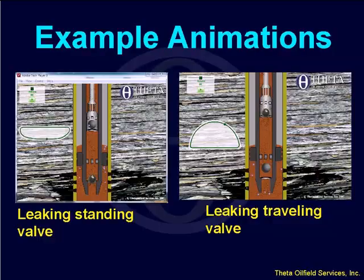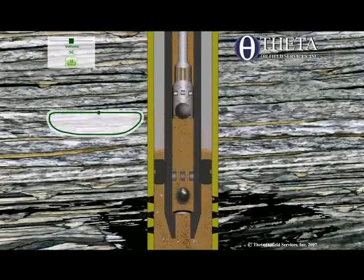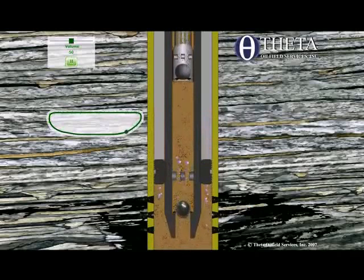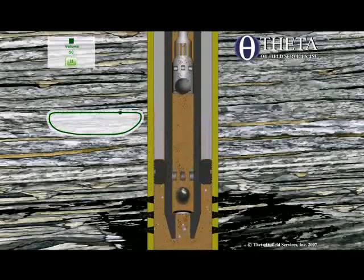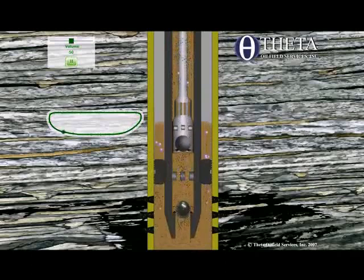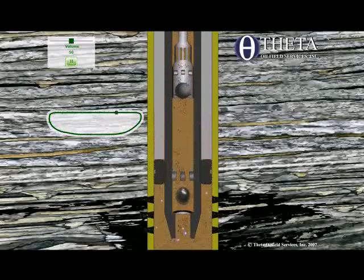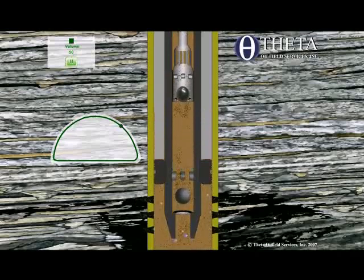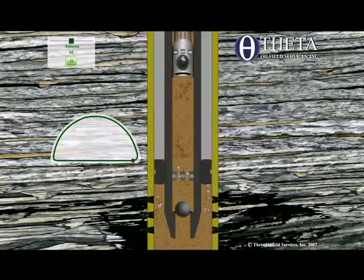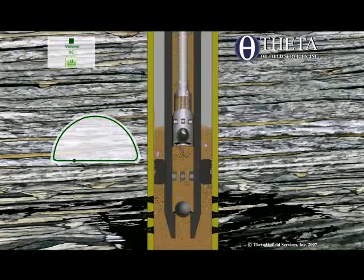Here is the leaking standing valve animation. On the downstroke, you're losing fluid through the standing valve. You can zoom in and look at that — see the fluid leaking out of the standing valve. And the same thing when you have a leaking traveling valve — on the upstroke, fluid is leaking out.